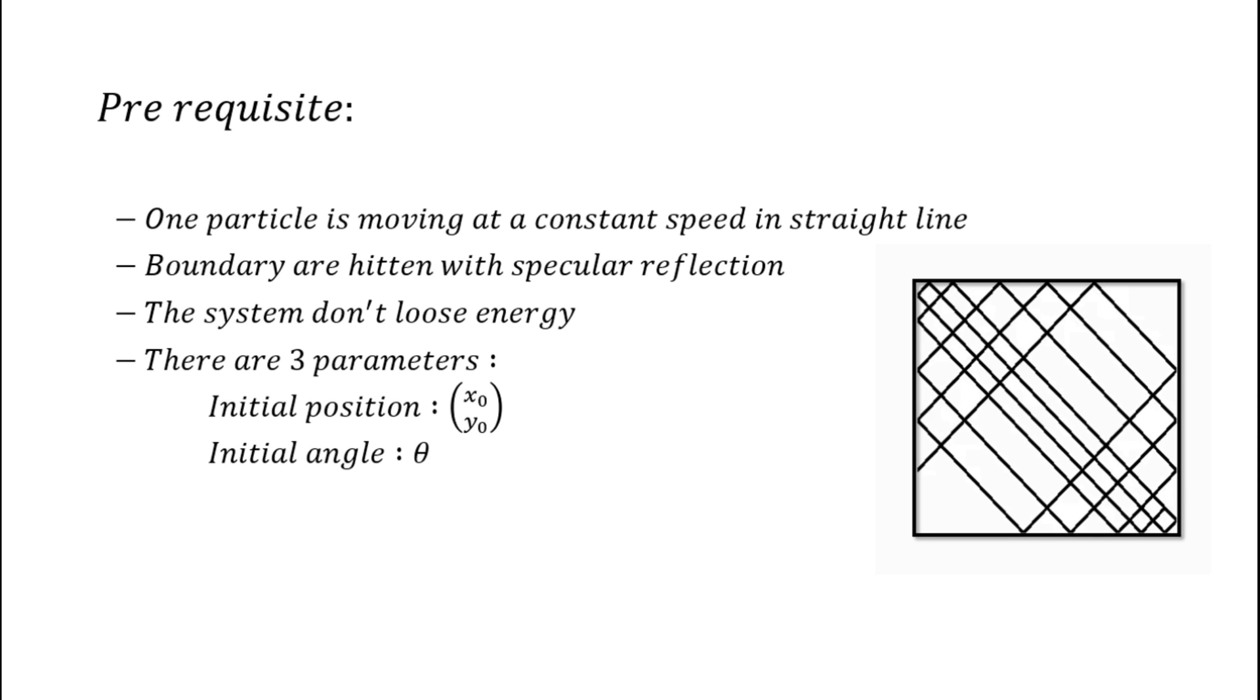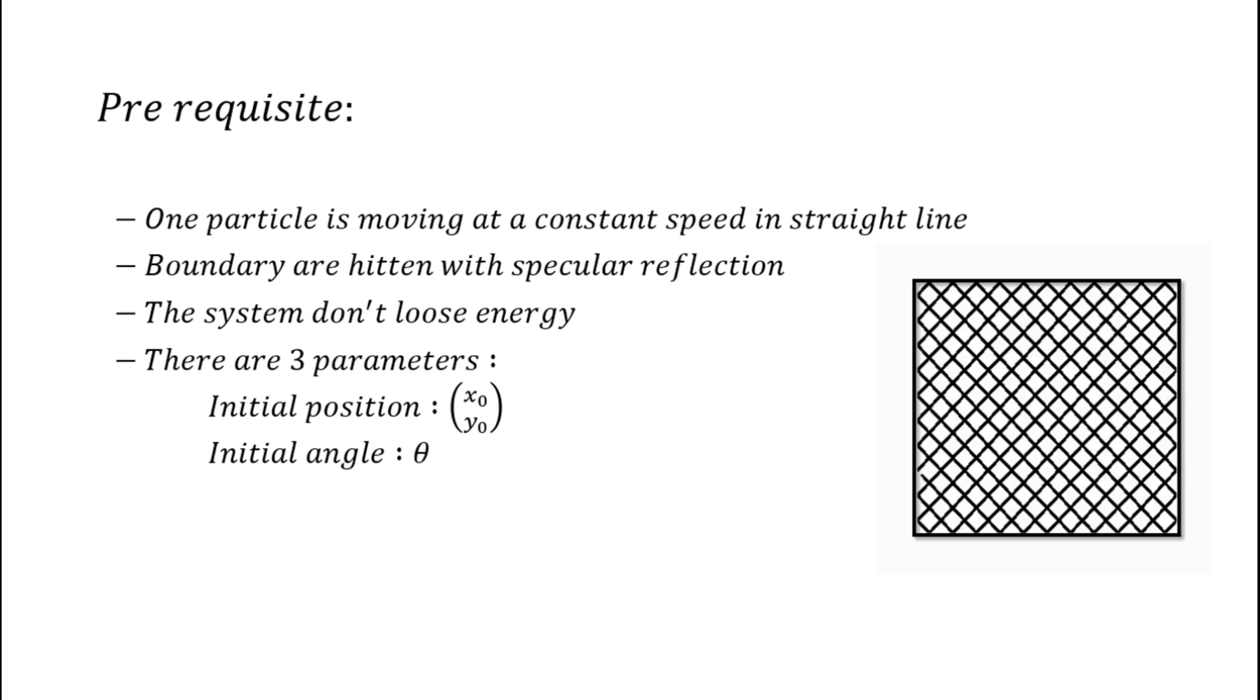There are only three parameters that can change the trajectory of the ball: the initial position x0 and y0, and the initial angle theta at which the ball is hit. This means that once these parameters are fixed, there is only one unique possible trajectory.